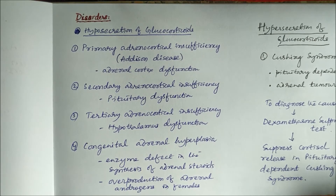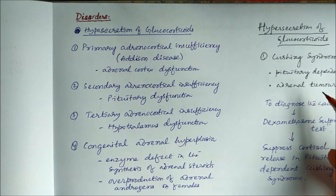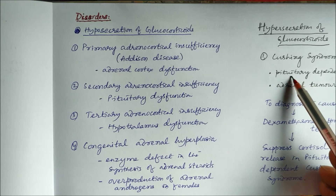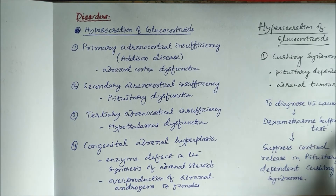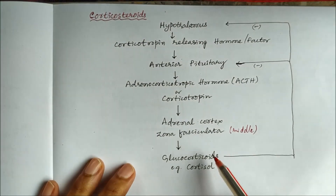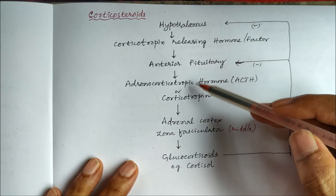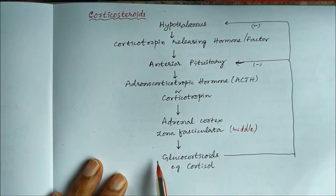Disorders due to hypersecretion of glucocorticoids are known as Cushing's syndrome, which is mostly pituitary dependent or may be due to an adrenal tumor. To diagnose the cause, we use the dexamethasone suppression test. When cortisol levels are elevated, they send negative impulses to the anterior pituitary and hypothalamus, suppressing ACTH and CRF release.